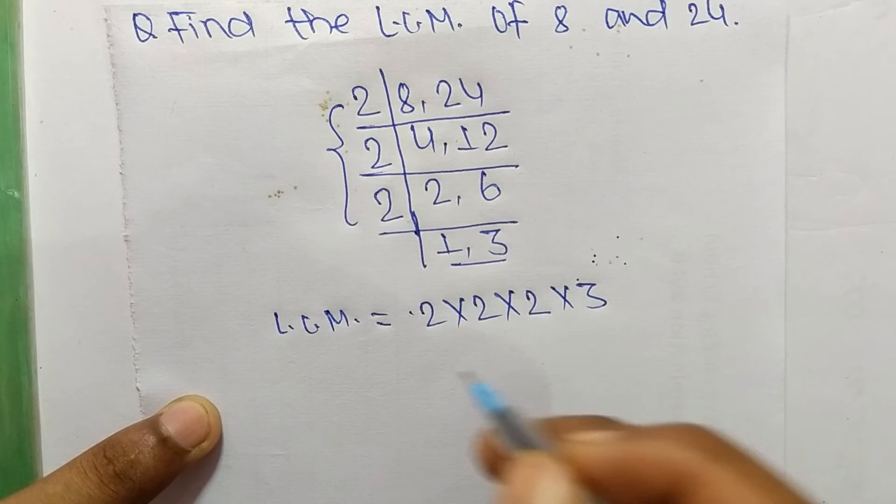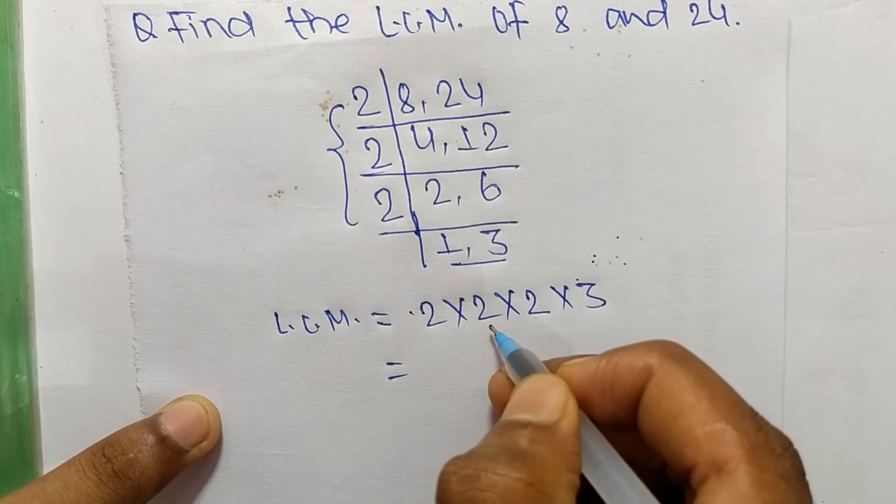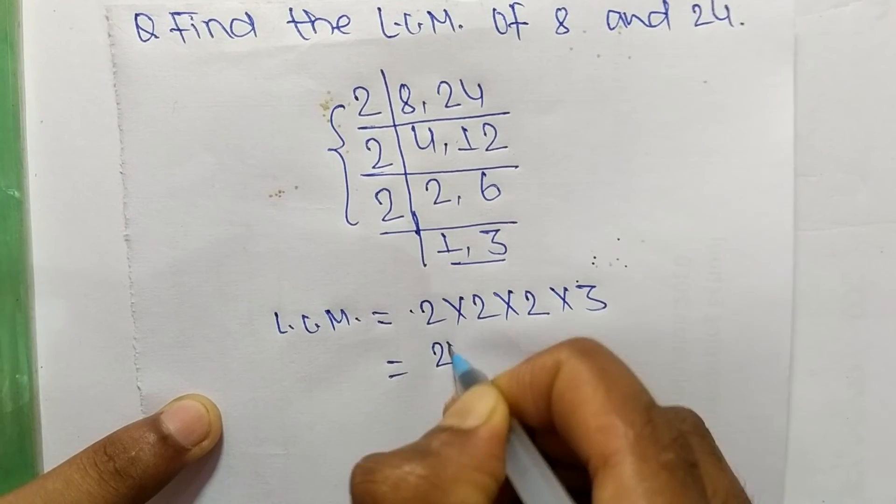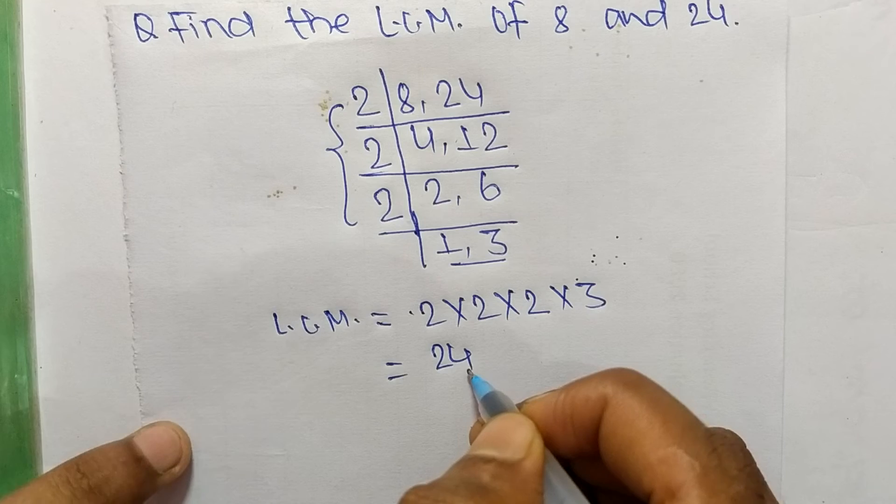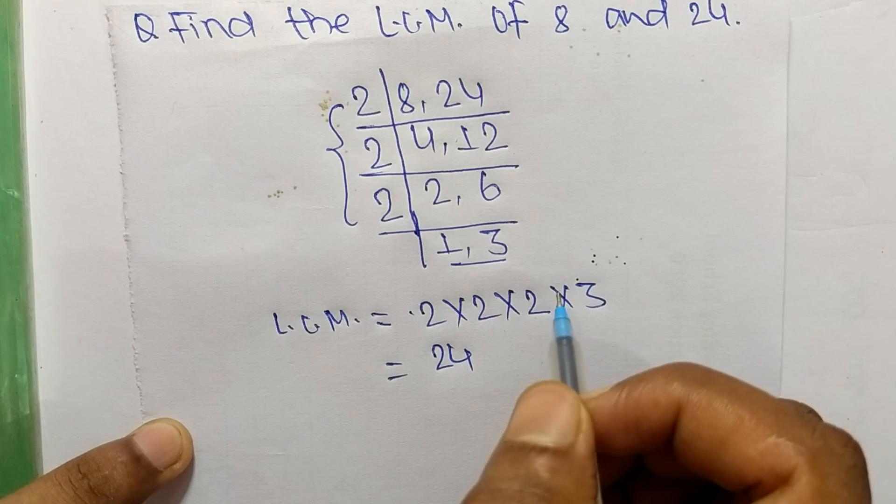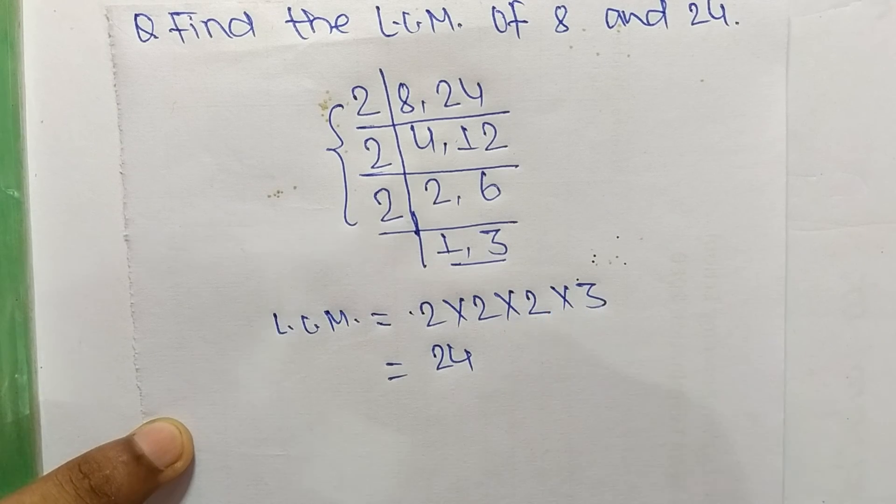2 times 2 means 4, and 4 times 2 means 8, and 8 times 3 means 24. So 24 is the LCM of 8 and 24. This much for today, and thanks for watching.